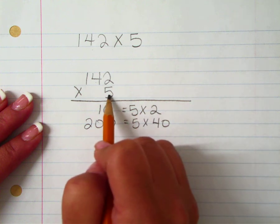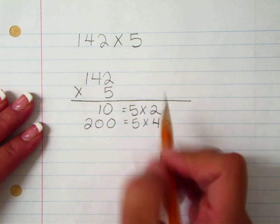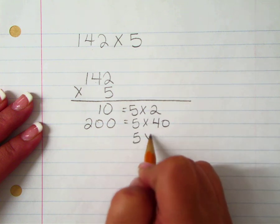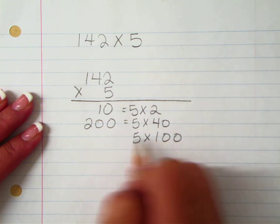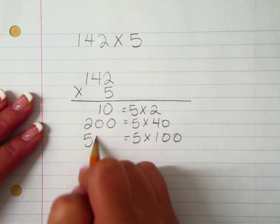And then this digit, the value of this digit multiplied by the value of this digit, which is 5 times 100, which equals 500.